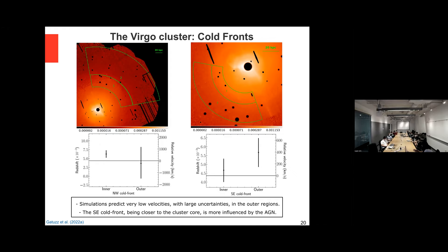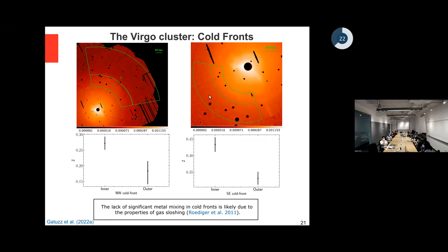There are cold fronts in this galaxy cluster — we have identified at least two. For the left cold front, the velocities have large uncertainties and no clear difference between regions, which could be due to gas sloshing, because when you have gas sloshing the velocities vary a lot in small regions and the uncertainties are large. For the other cold front, there is a trend: velocity increases as we move from one region to another. This cold front is closer to the cluster core, so it could be influenced by the AGN output. In both cases, the difference in metallicity across the cold front is really clear.